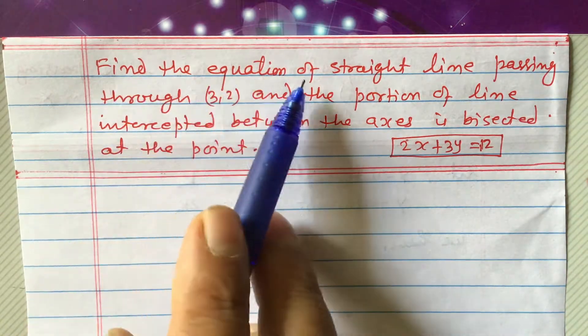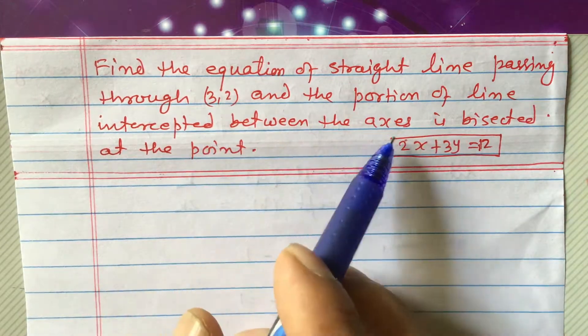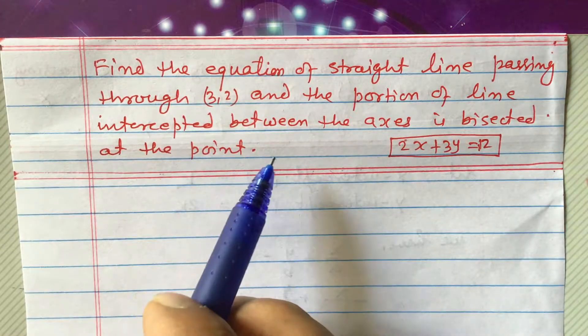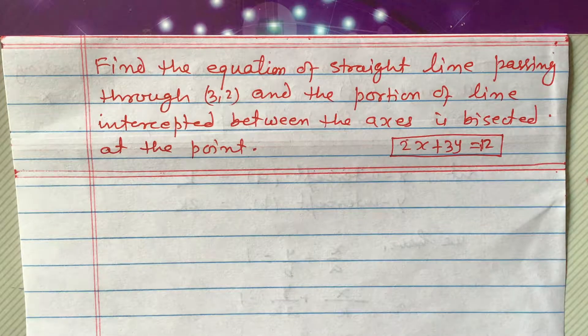So, equation is like this. Find the equation of a straight line passing through 3, 2 and the portion of the line intercepted between the axis is bisected at the point.